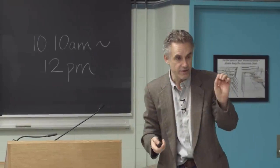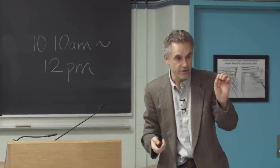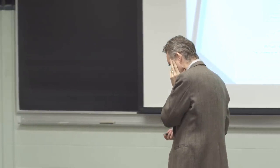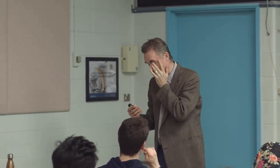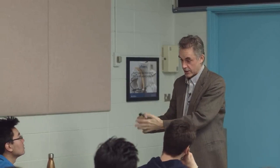Undesired outcomes produce threat and anxiety — but that's not even exactly right; that's an elementary discussion of the role of comparator systems in the brain, which we'll talk about in more detail. The general notion is that the violation of an expectation produces anxiety, and that's a pretty good model with support from the psychophysiological and pharmacological literature.